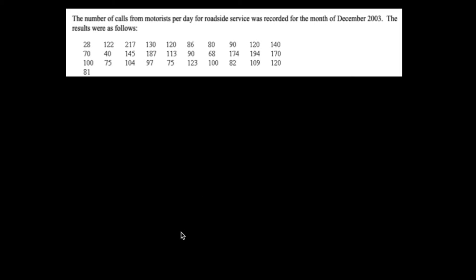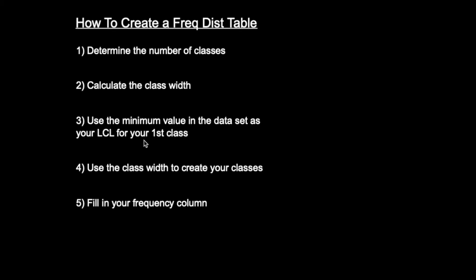Now we're going to actually create a frequency distribution table, and you guys are going to follow the steps that I tell you here, because I want it done a certain way. We're going to use this data set, which represents the number of calls from motorists per day for roadside service that was recorded for the month of December 2003. So 28 calls on December 1st, 122 calls on December 2nd — that's what that set represents. These are the steps to create a frequency distribution table.